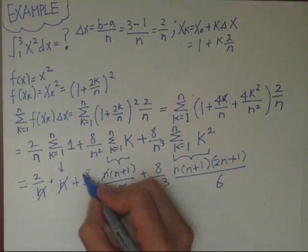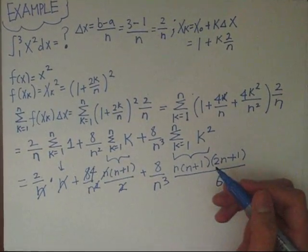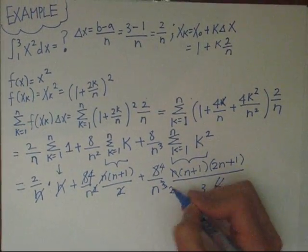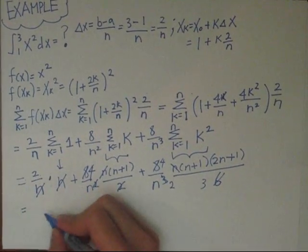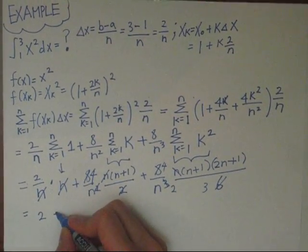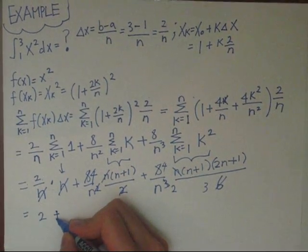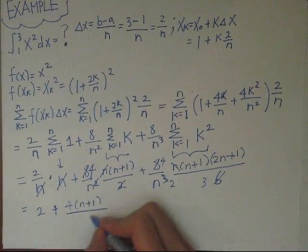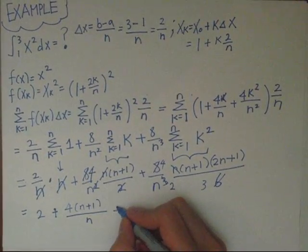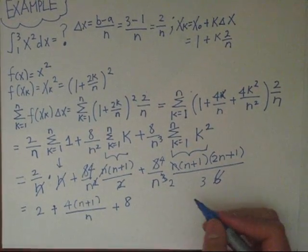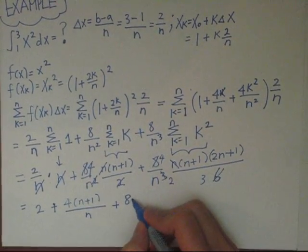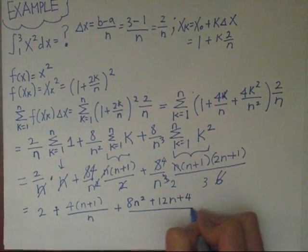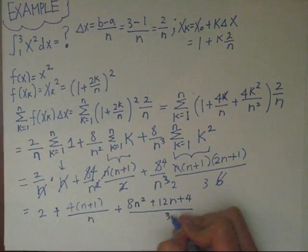Canceling out n's and simplifying the numbers, you get 2 plus 4 times n plus 1 over n, plus, after expanding all the brackets and multiplying through, 8n squared plus 12n plus 4 over 3n squared.